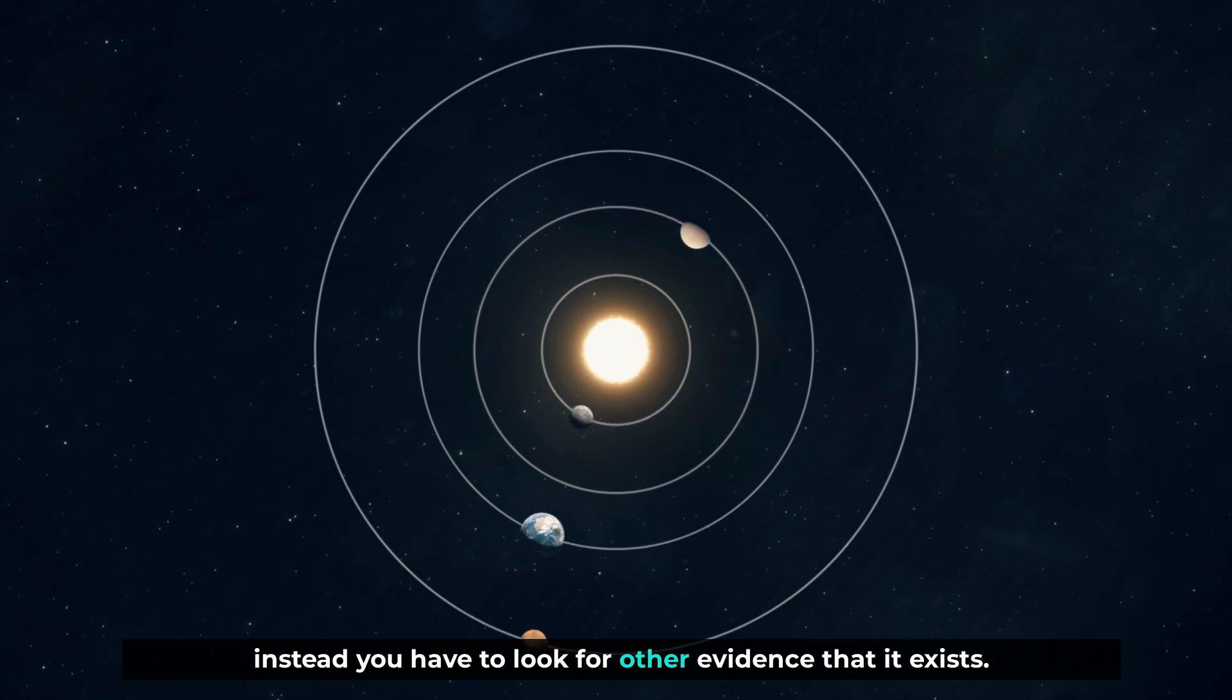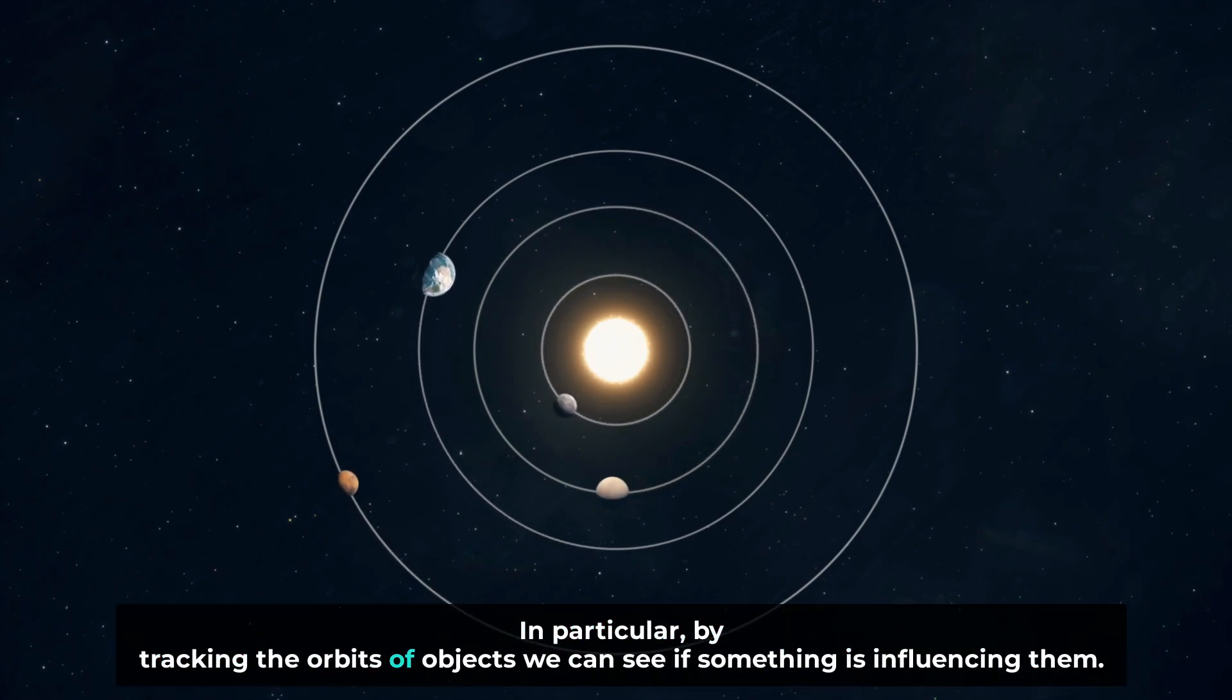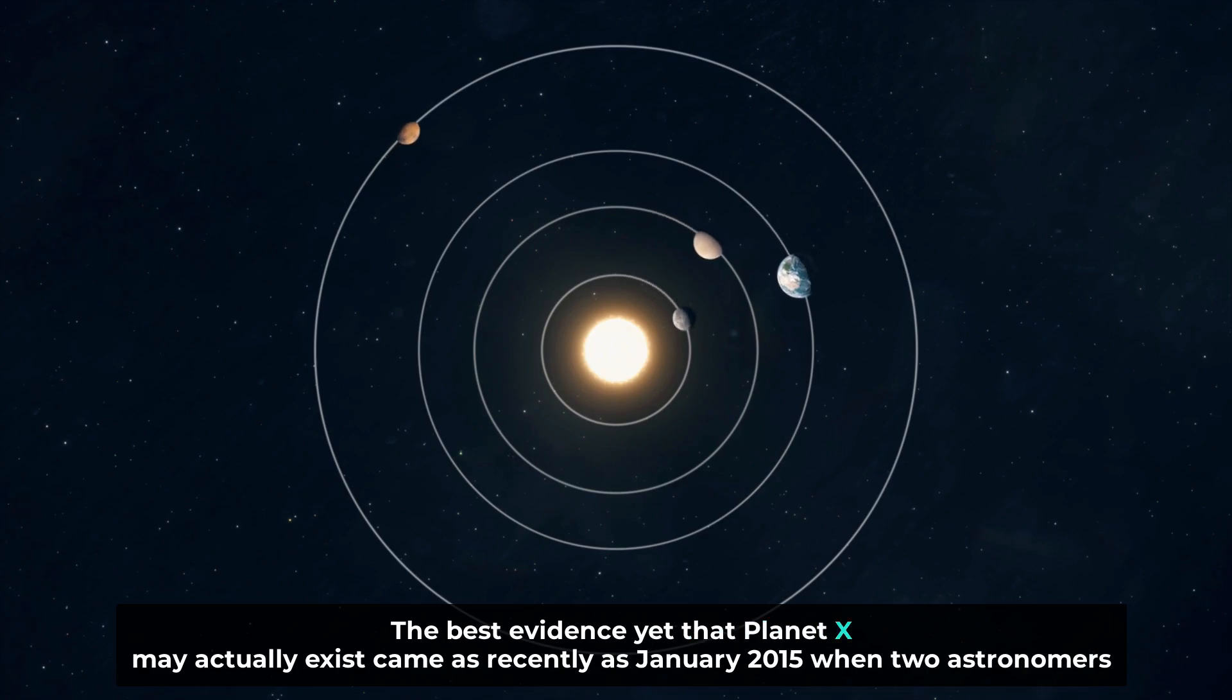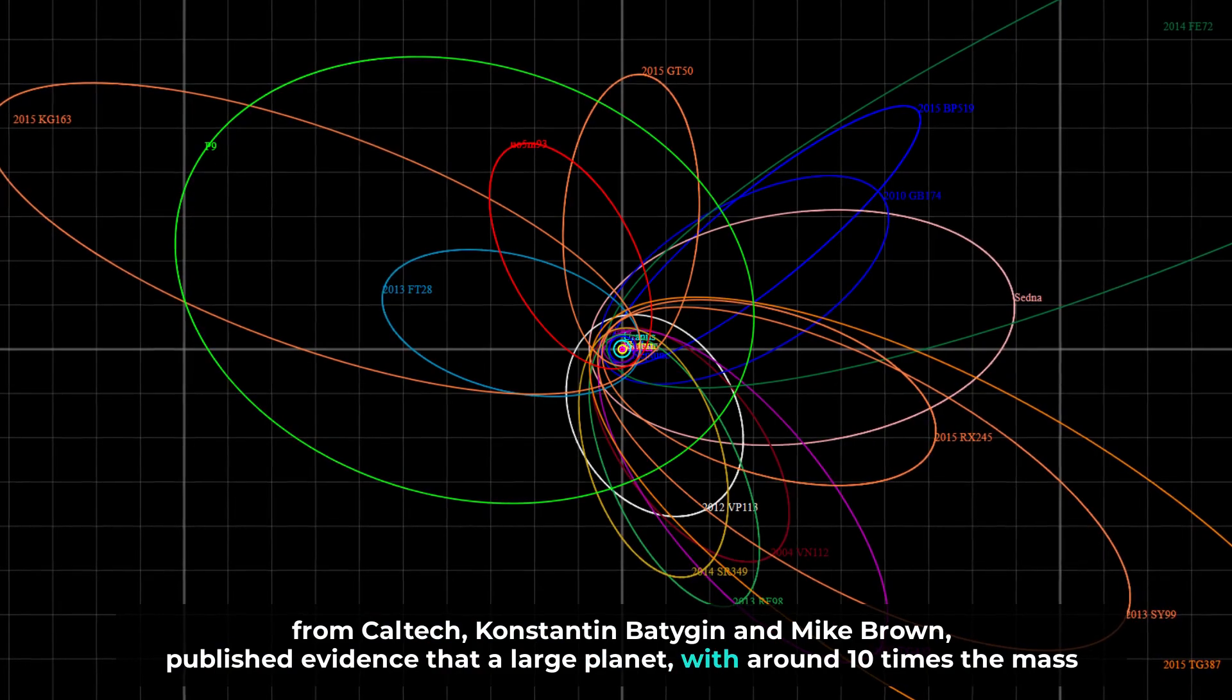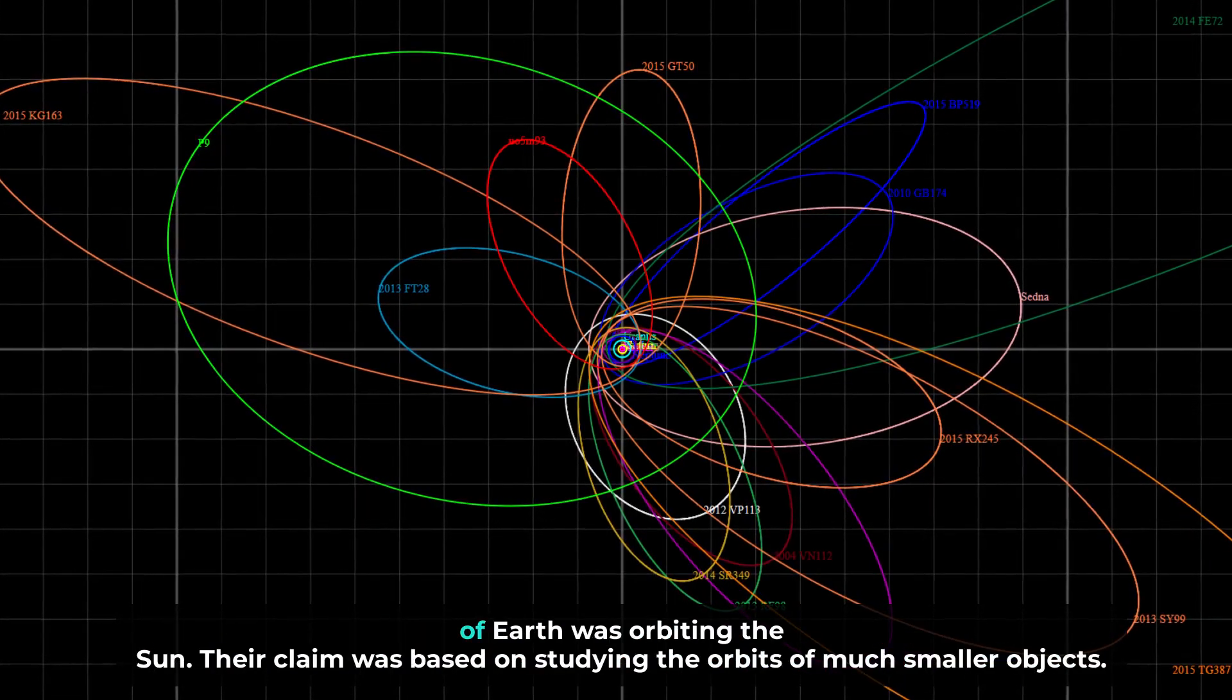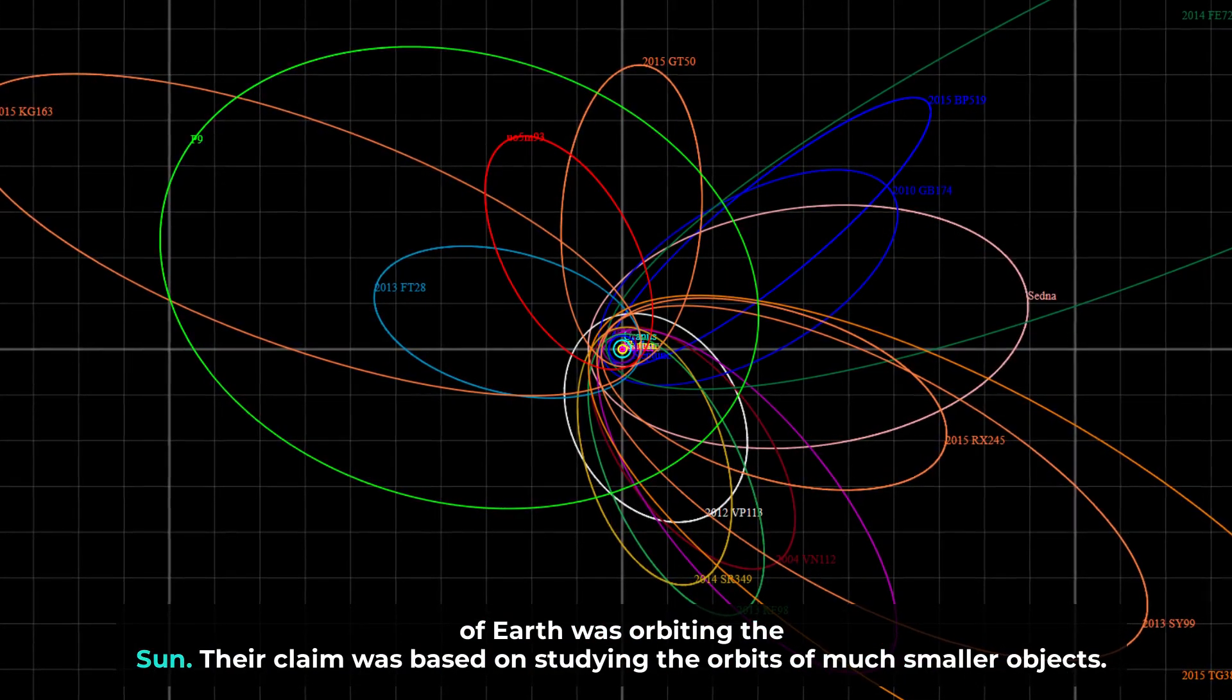The chance of randomly spotting something that far away is infinitesimal. Instead, you have to look for other evidence that it exists. In particular, by tracking the orbits of objects, we can see if something is influencing them. The best evidence yet that Planet X may actually exist came as recently as January 2015 when two astronomers from Caltech, Konstantin Batygin and Mike Brown, published evidence that a large planet with around 10 times the mass of Earth was orbiting the sun.